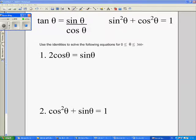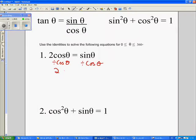The first one is 2 cos θ equals sin θ. So first I'm going to divide both sides by cos θ in order to leave 2 equals sin θ divided by cos θ.